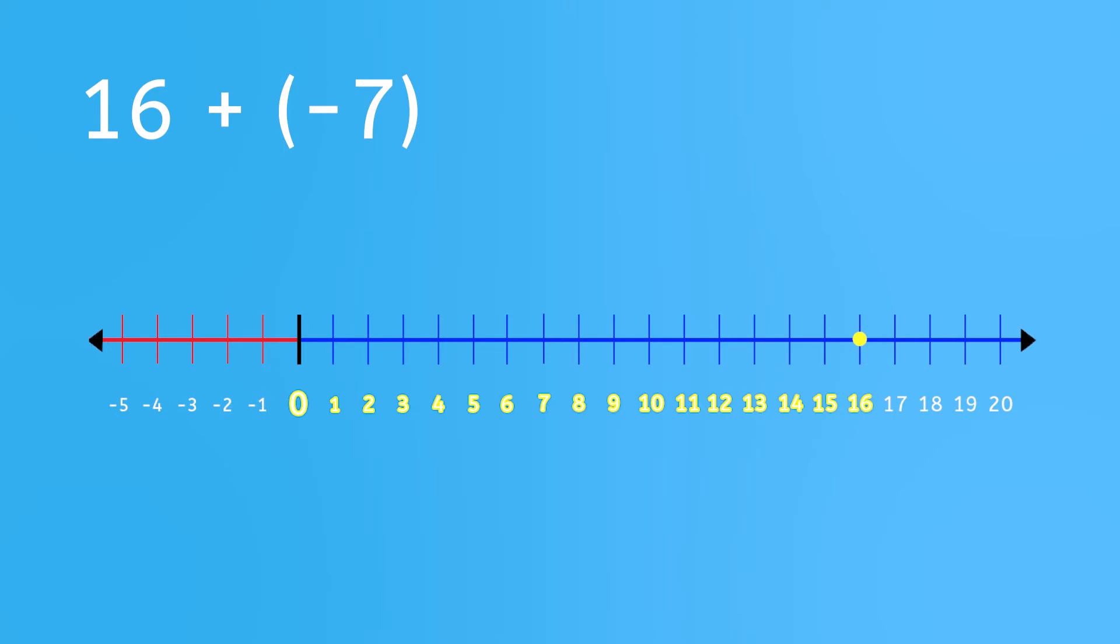Then, the number sentence tells us to add a value of negative 7. Negative numbers move to the left. So from our spot on 16, move 7 spaces to the left. You should land on the 9. Which 9? It is the positive 9, because we've landed to the right of the zero.